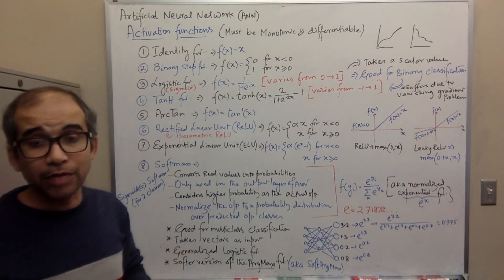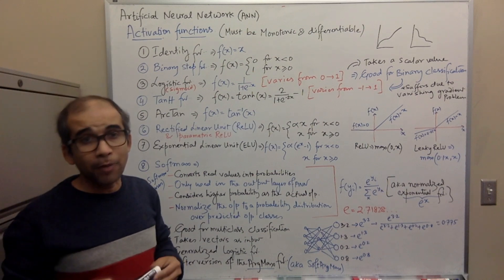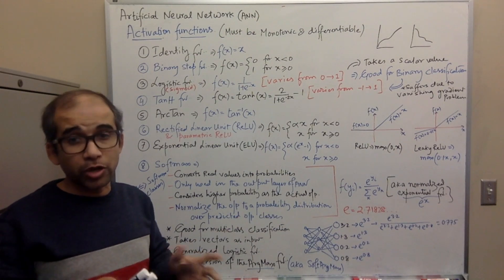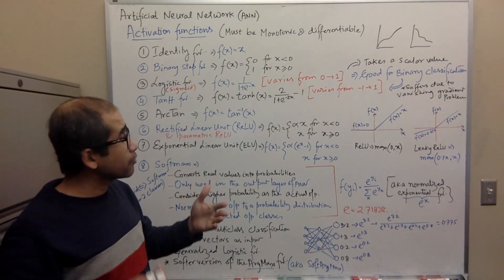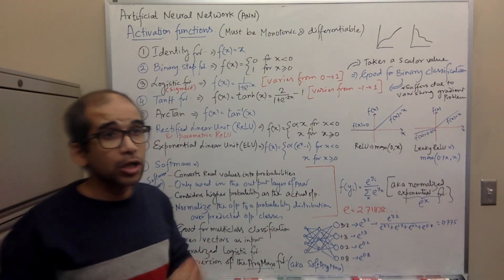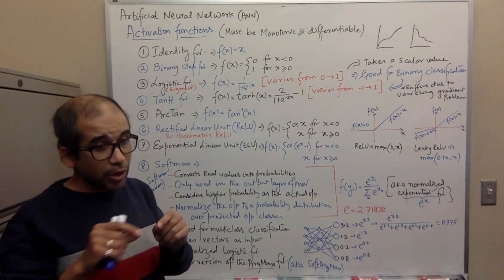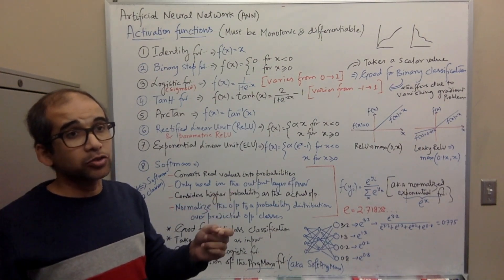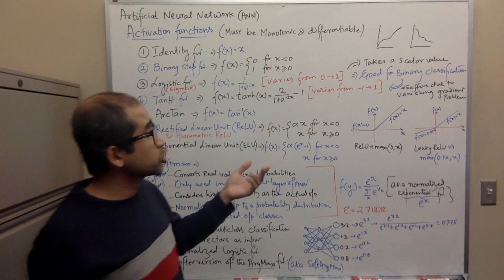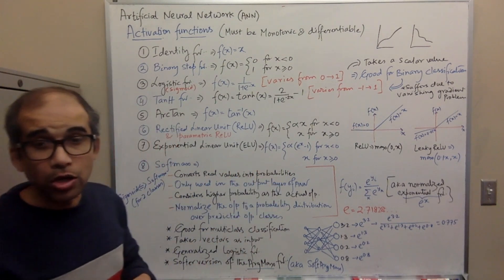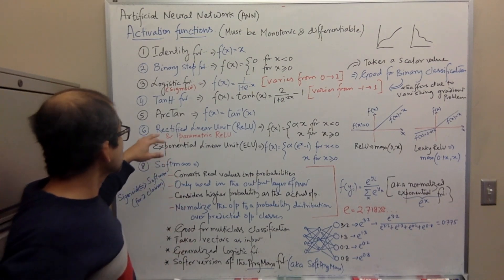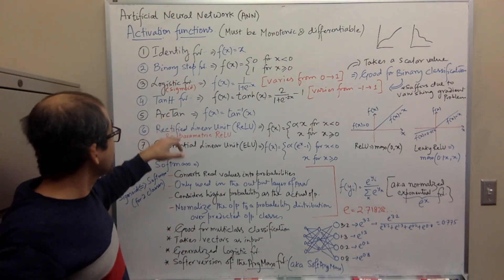Both sigmoid and tanh are more computation-intensive and suffer from the vanishing gradient problem. During backpropagation, we take partial derivatives using the chain rule. When the partial derivative values are very small, multiplying them together causes the gradient with respect to a particular weight to become negligibly small — that's the vanishing gradient problem. I encourage you to look into this further.